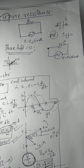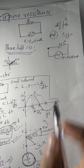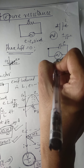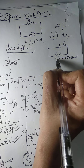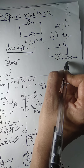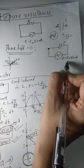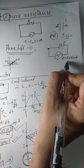In the last video we have seen the introductory part. We have seen the AC supply when it is connected to a resistor and also with an inductor. Now we are seeing what is happening when a capacitor is connected to an AC supply, and we are giving an instantaneous EMF: E = E₀ sin(ωt).